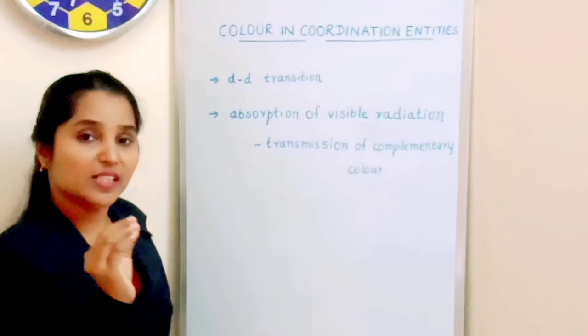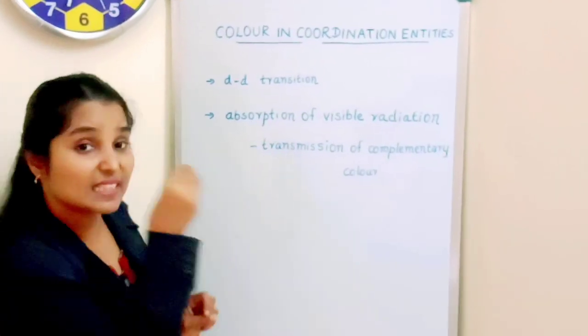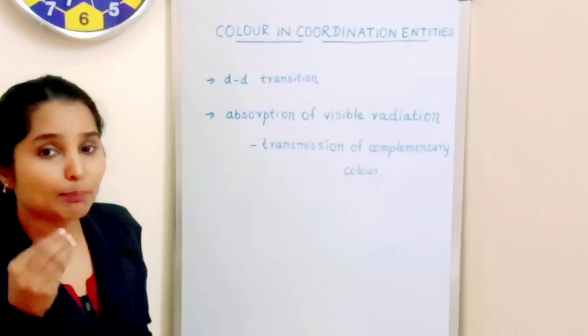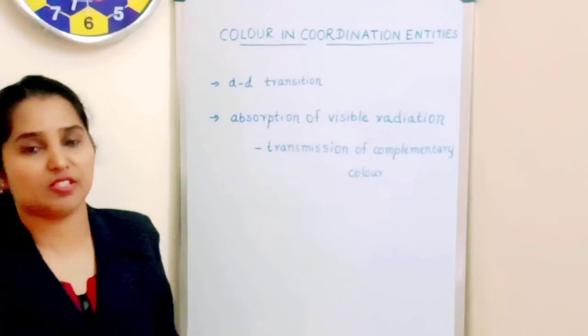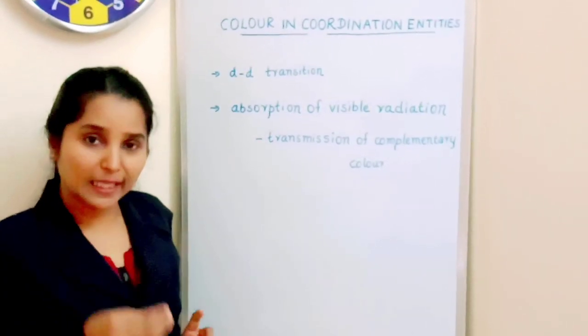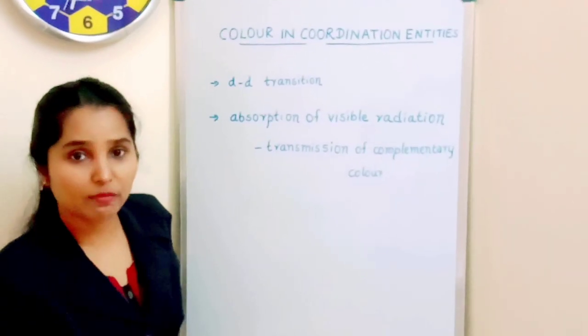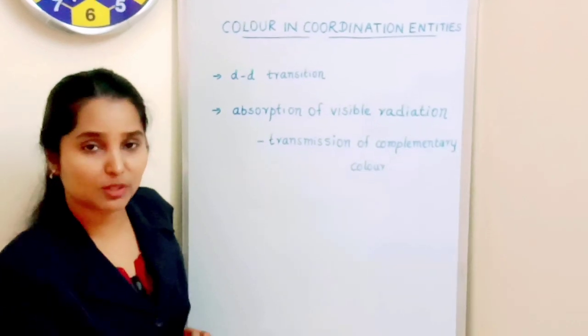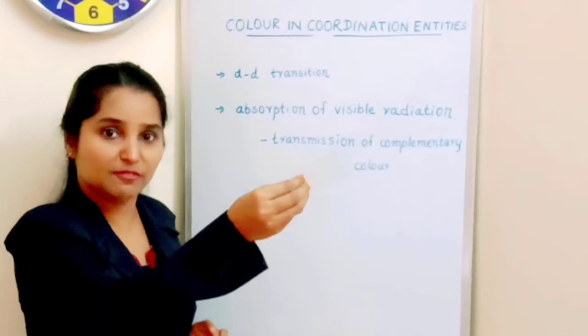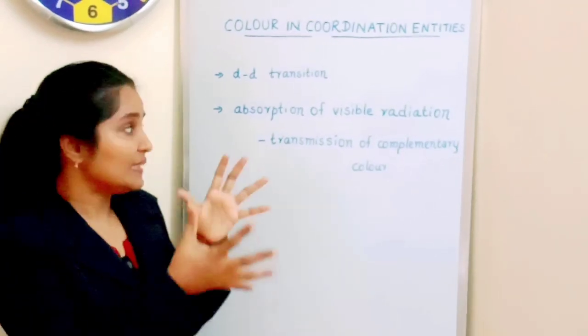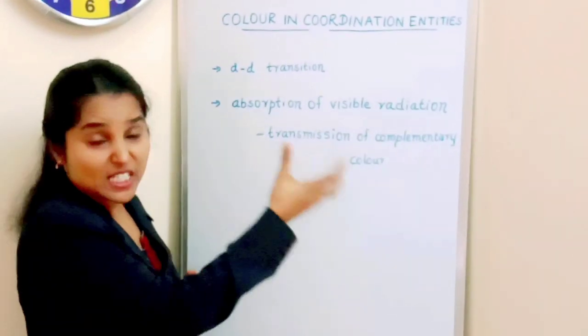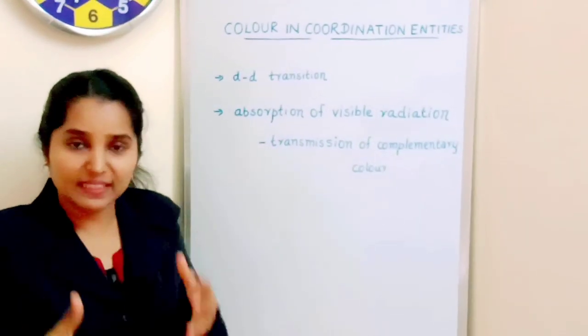The color in coordination entities is solely caused by this d-d transition. What happens when an electron jumps from lower level of d-d set of orbitals to the higher level of d-d set of orbitals? During that time, they absorb visible radiation, a kind of energy equal to the visible radiation.